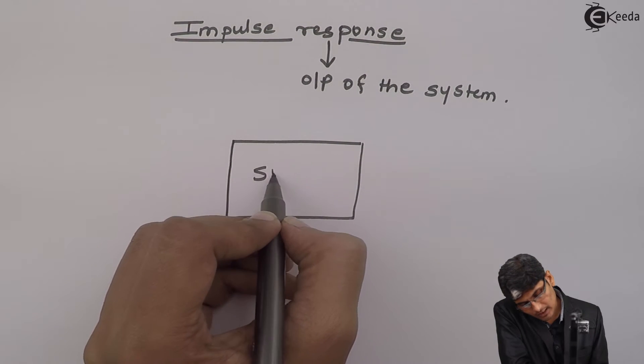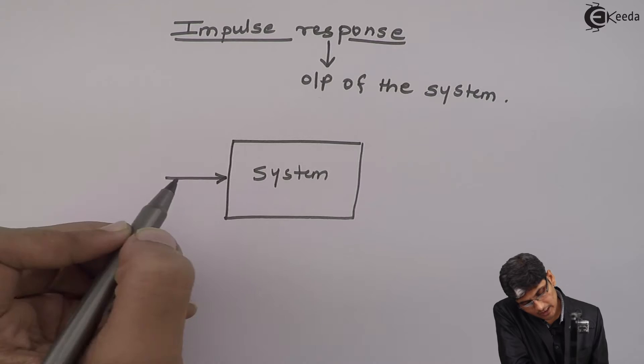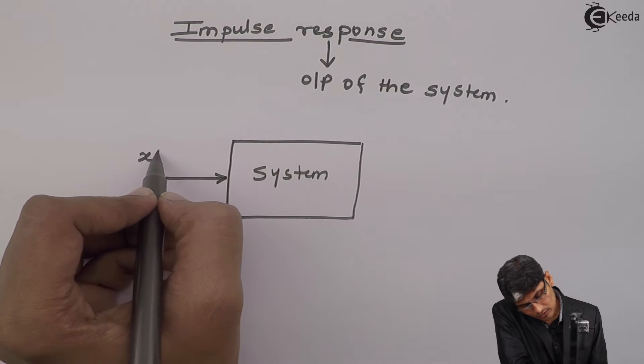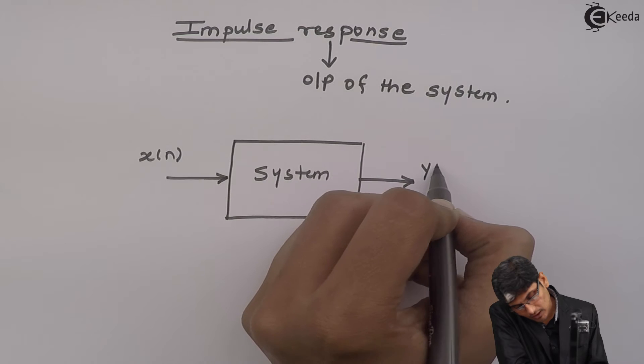If suppose I have a system, to which I give an input as x of n and I have an output y of n.